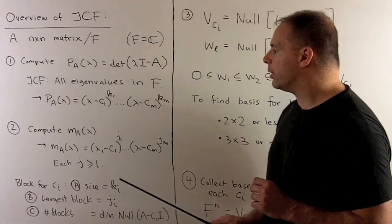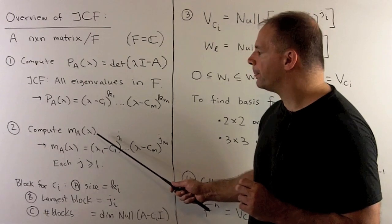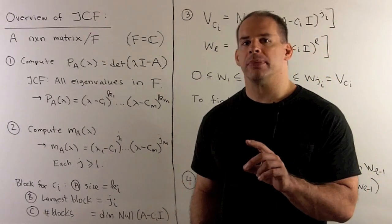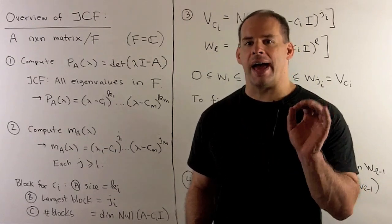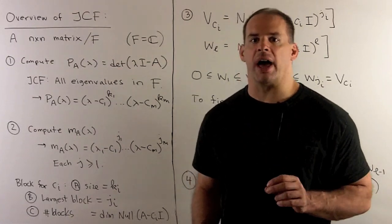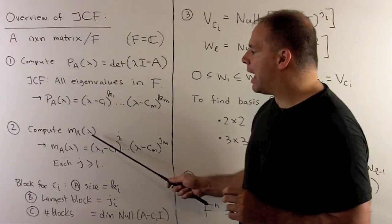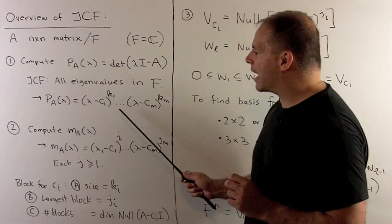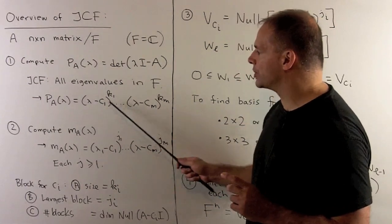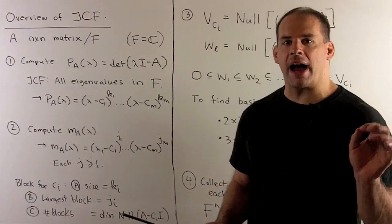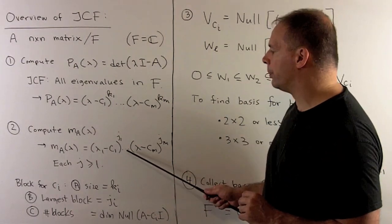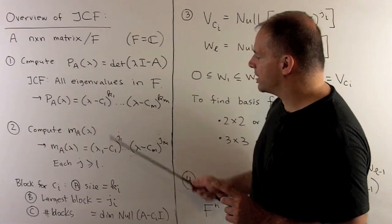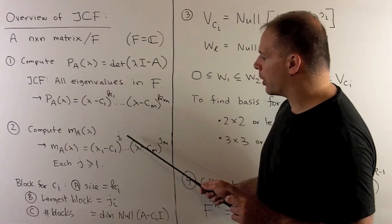Once we have our characteristic polynomial, we want to compute the minimal polynomial of A. This will be the monic polynomial of smallest degree such that, if we evaluate it at A as a matrix polynomial, we get the zero matrix out. We know the minimal polynomial of A divides the characteristic polynomial of A, and if we have some irreducible factor that occurs in the characteristic polynomial, that factor must occur in the minimal polynomial with degree at least one. So the only difference is we have the same factors but may have different exponents.